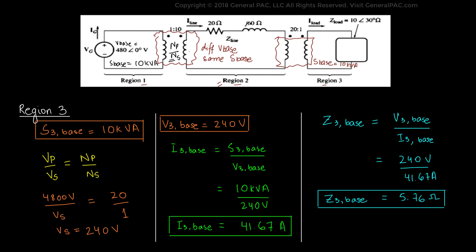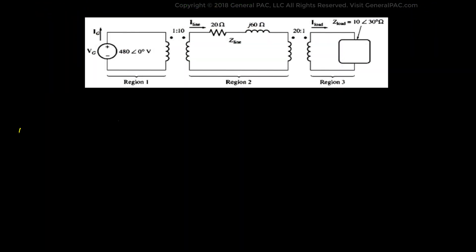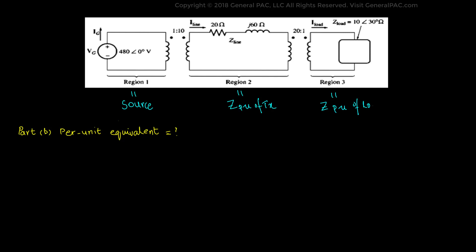So now we have calculated the voltage base, impedance base, power base, and current base for Region 1, Region 2, and Region 3. Now that we have completed Part A — the base values for every region — let's move on to Part B, where we are asked to convert the system to a per unit equivalent circuit. The per unit equivalent consists of components from the individual regions. Region 1 is the generating region, so the equivalent is the source. Region 2 is the transmission line, giving the per unit impedance of the line. Region 3 contains the load, giving the per unit impedance of the load. The generic formula is: per unit value equals actual value divided by base value.